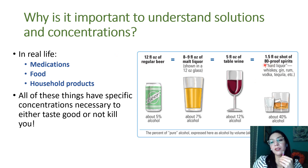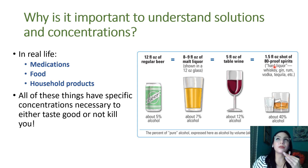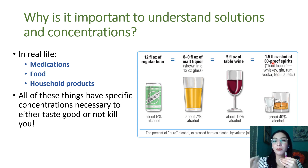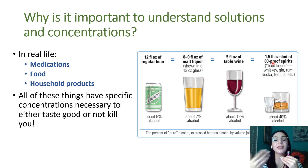If you've ever heard the term 'proof' — like 80 proof — anything proof is double the percentage. So here you have 40% alcohol, which is 80 proof. You might have also heard the term 200 proof, which is 100% alcohol — double the percentage.